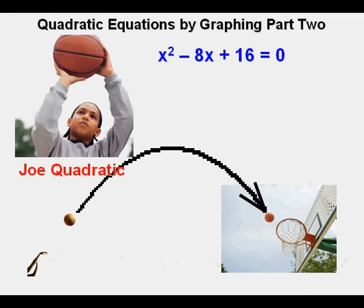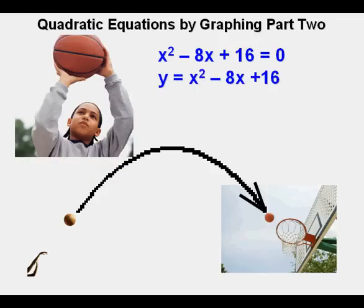Let's look at this equation, x squared minus 8x plus 16 equals zero. Joe changes this to a quadratic function in graphical form by changing the zero to y. He also flips sides to make it more to his liking.